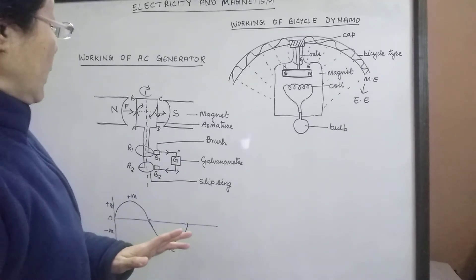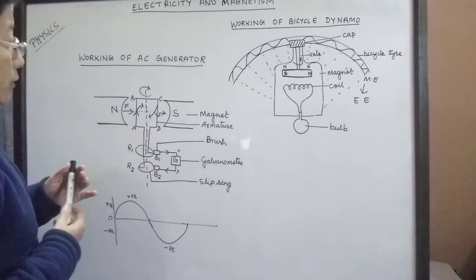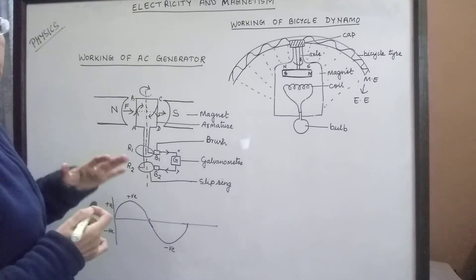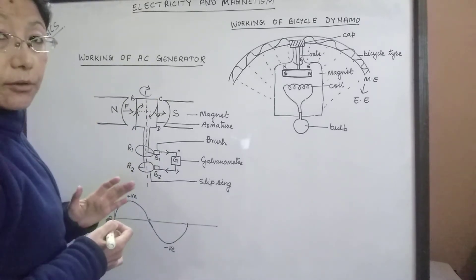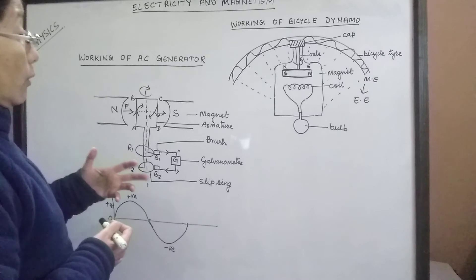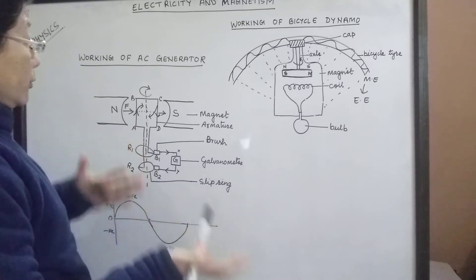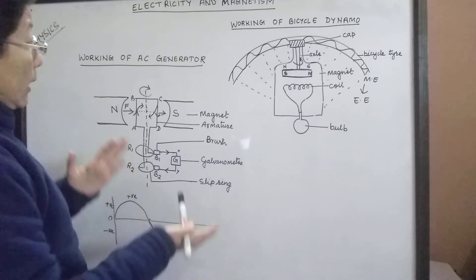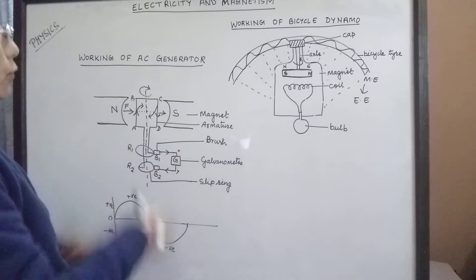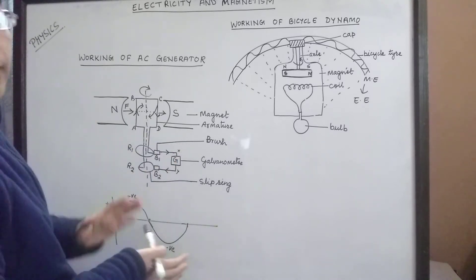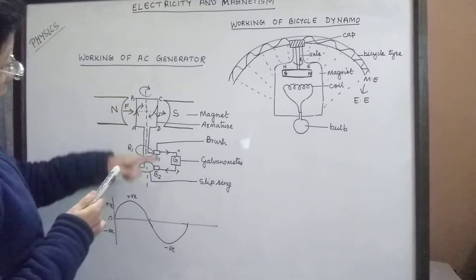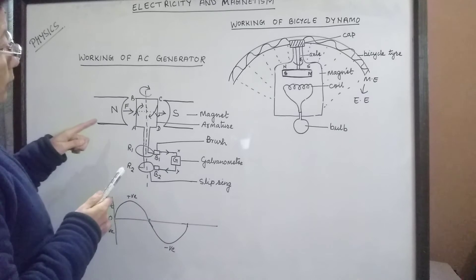The AC generator produces a large amount of current and this device is used in hydropower stations. The current which we have in our homes is produced in hydropower stations, and in the hydropower station this device is used to produce current. Now we will see the structure of this device.